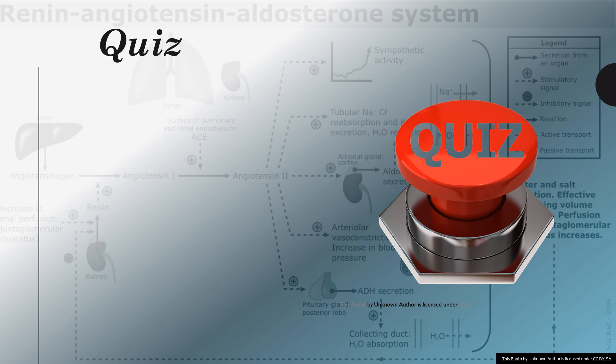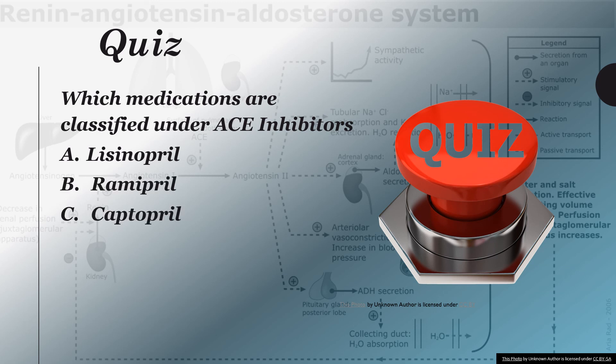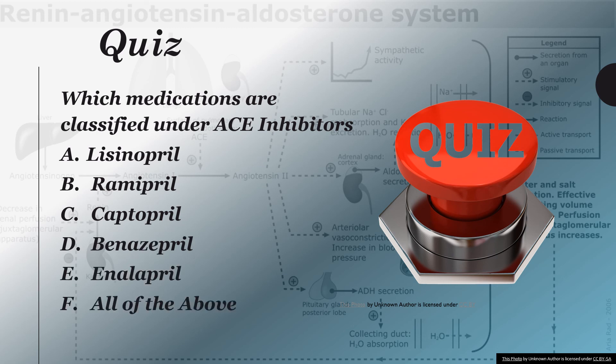Quiz: Which medications are classified as ACE inhibitors? A) lisinopril, B) ramipril, C) captopril, D) benazepril, E) enalapril, F) all of the above. The answer is all of the above.